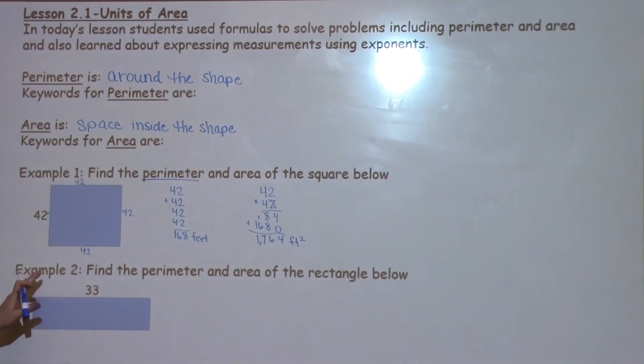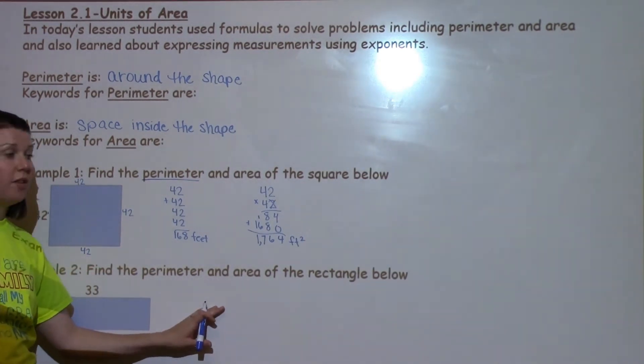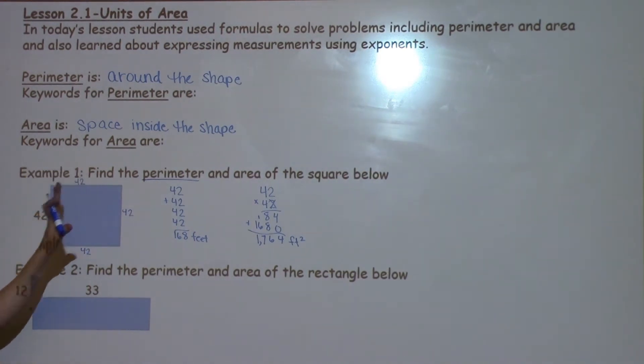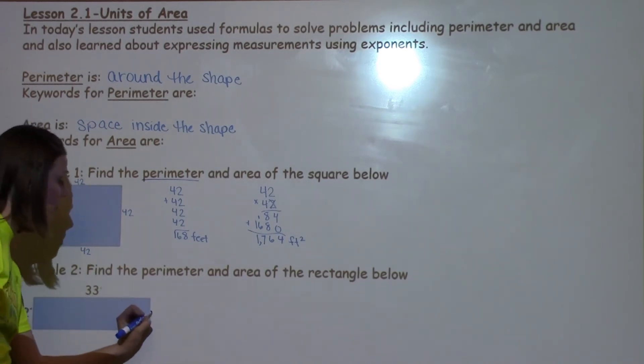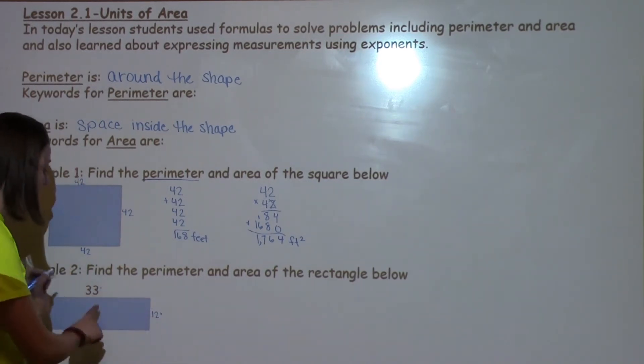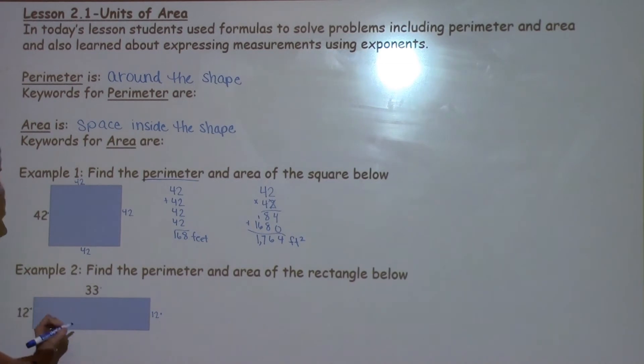For our next example, we're going to find the area and perimeter of the rectangle below. Same principles are going to apply to the square and the rectangle. So on this side, I've got 12 inches and I've got 33 inches. If I know this side is 12, I know this side is 12 as well. If this side is 33, I know the bottom is 33.